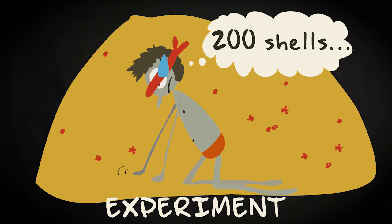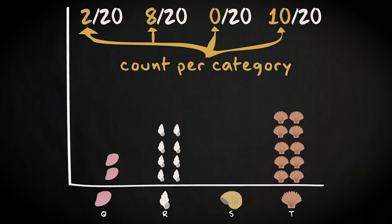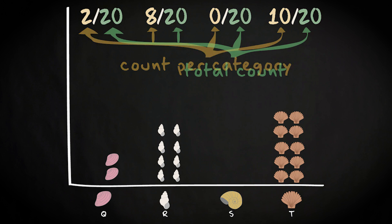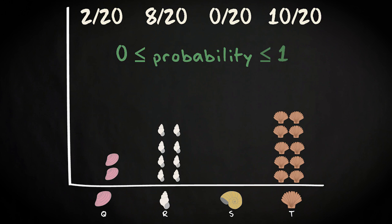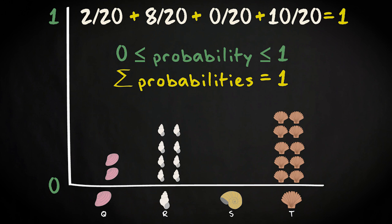Because you are dividing the counts per shell type by the total number of shells when you calculate relative frequencies, two properties always hold. Each probability will be larger or equal to 0 and smaller or equal to 1. And the sum of the probabilities for all the possible outcomes of the random phenomenon will be 1.